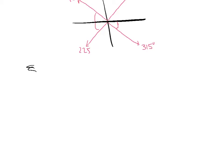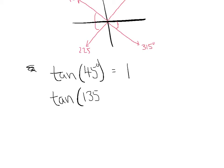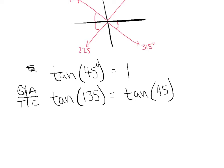When we go to evaluate them, we know that the tangent of 45 degrees is one of our favorite values — it's 1. When I evaluate the tangent of 135, that's equivalent to the tangent of 45, with one exception: 135 lives in the second quadrant. Using 'All Students Take Calculus,' only sine is positive in the second quadrant, so I negate that answer, giving me negative 1.